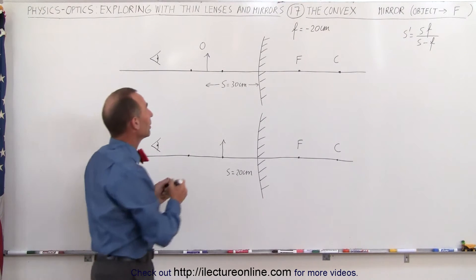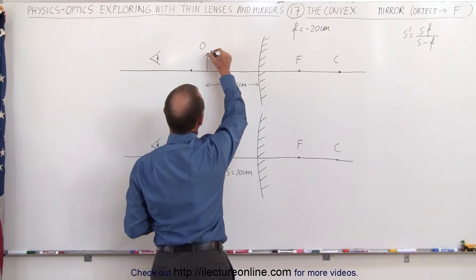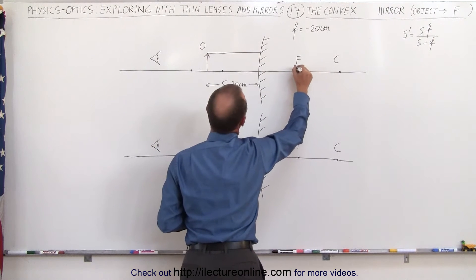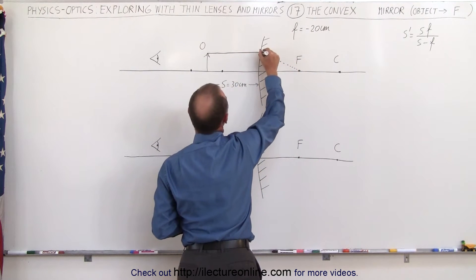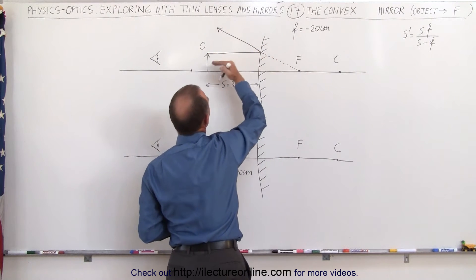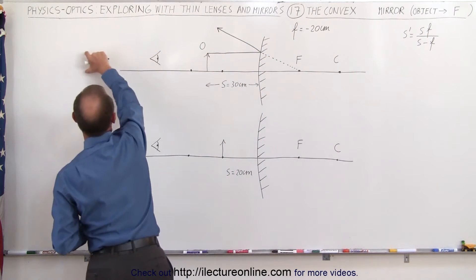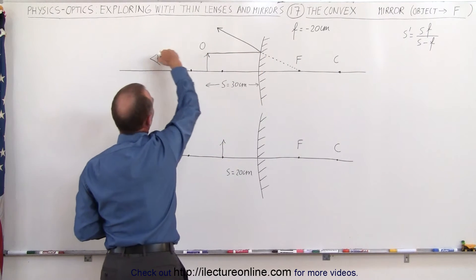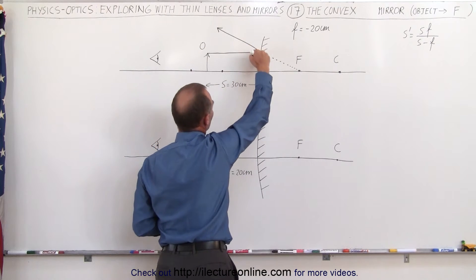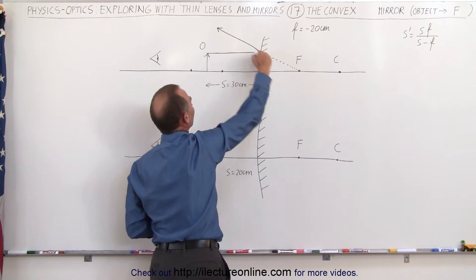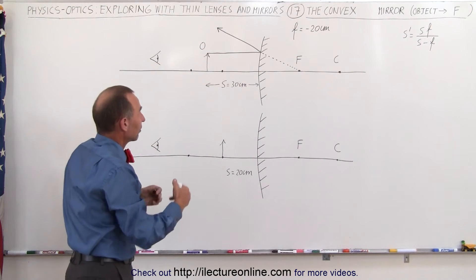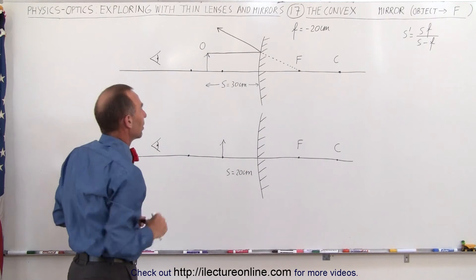First, we draw the first ray from the top of the object to the mirror. It will reflect back as if it came from the focal point behind the mirror. Notice that with convex mirrors, this ray will always be the same regardless of where the object is placed, since the ray parallel to the optical axis will always strike the mirror at the same location and reflect in the same direction. So that ray is always the same for any object of the same height placed in front of the mirror.